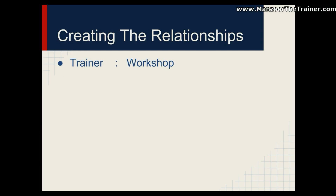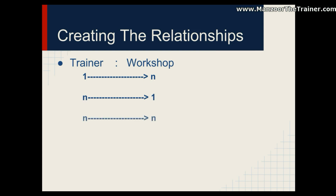To determine the relationship between Trainer and Workshop, we use a straightforward logic. One trainer can deliver multiple workshops — that is true. And multiple trainers can deliver the same workshop — yes, that is also true. If one-to-many and many-to-one both hold, it means the relationship is many-to-many. So the relationship between Trainer and Workshop is many-to-many.